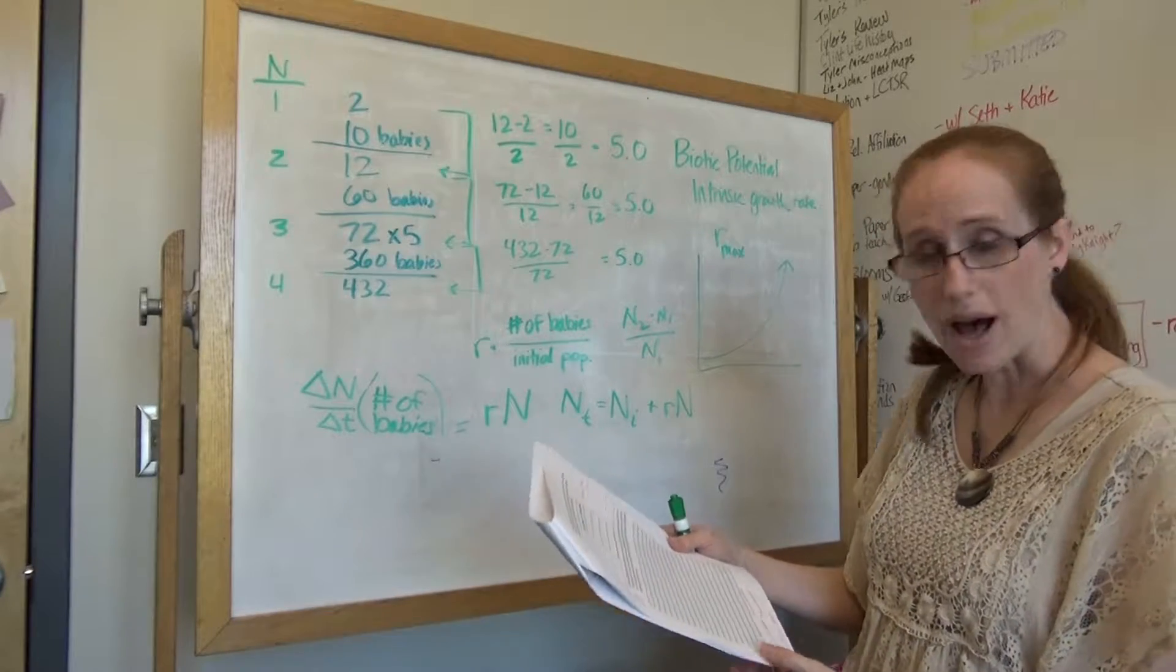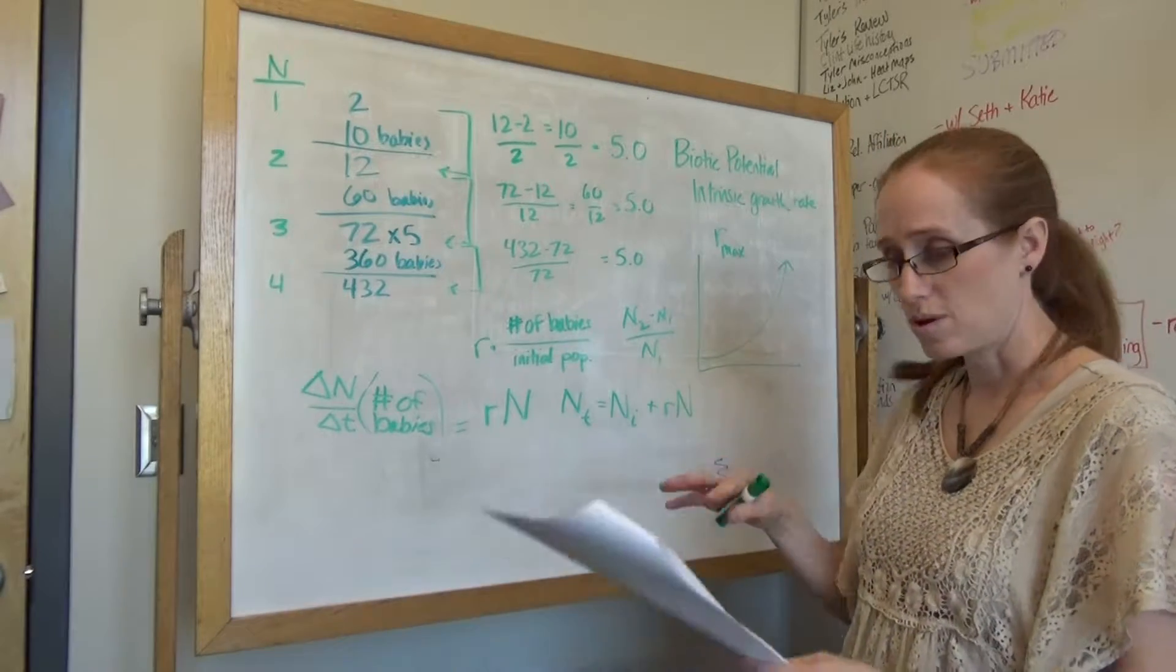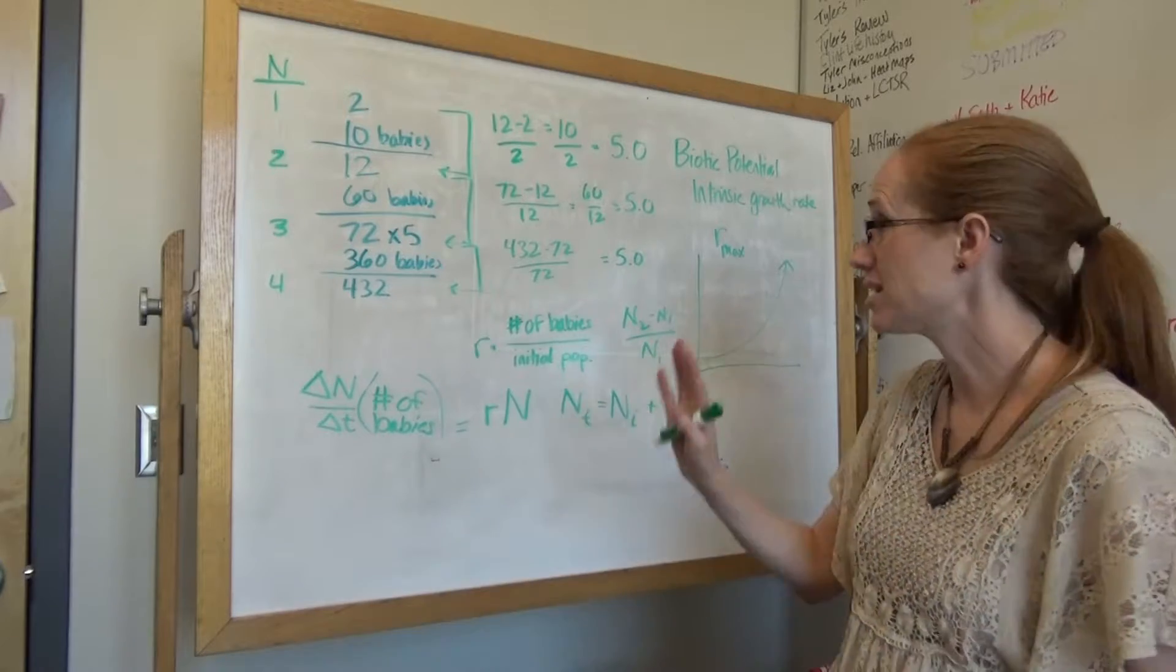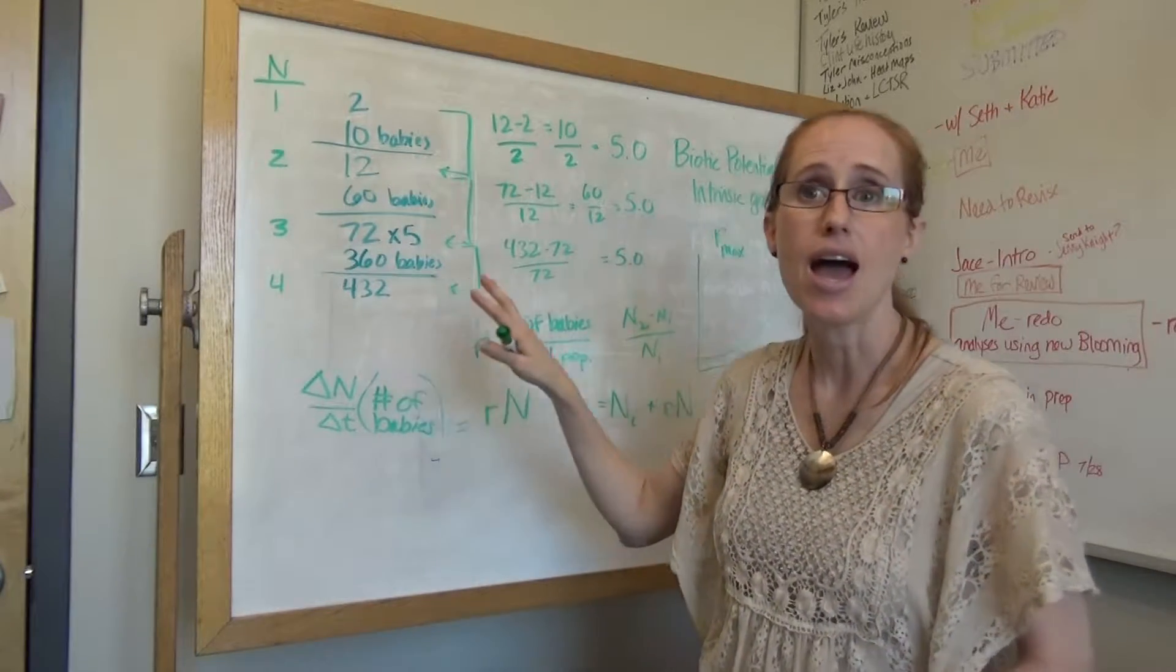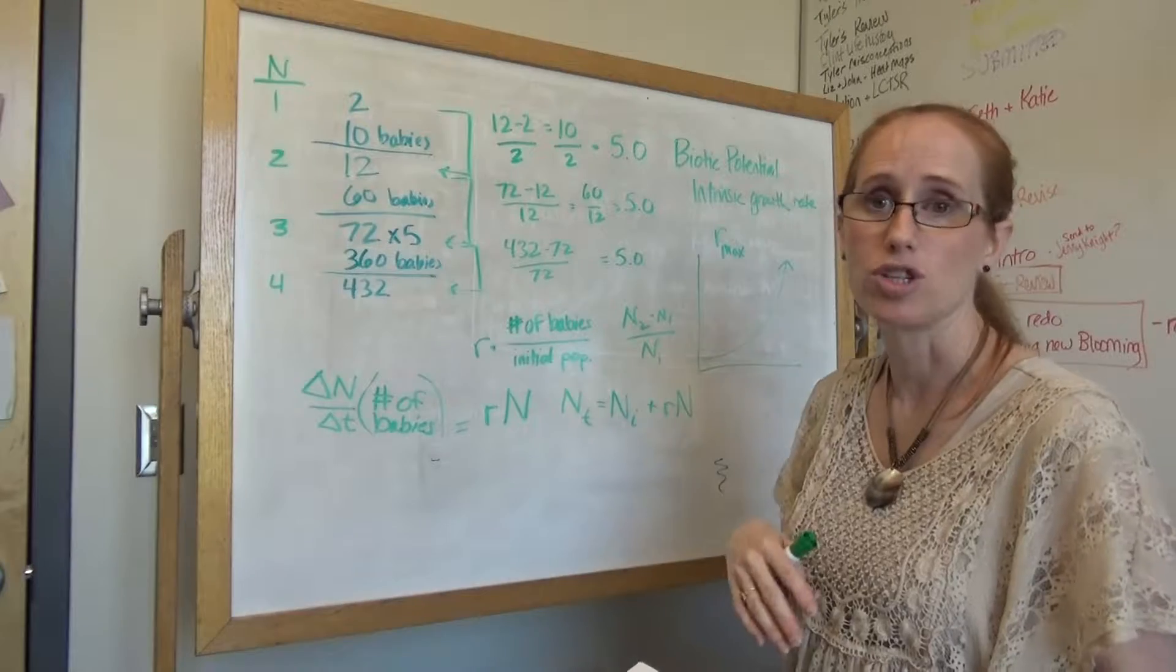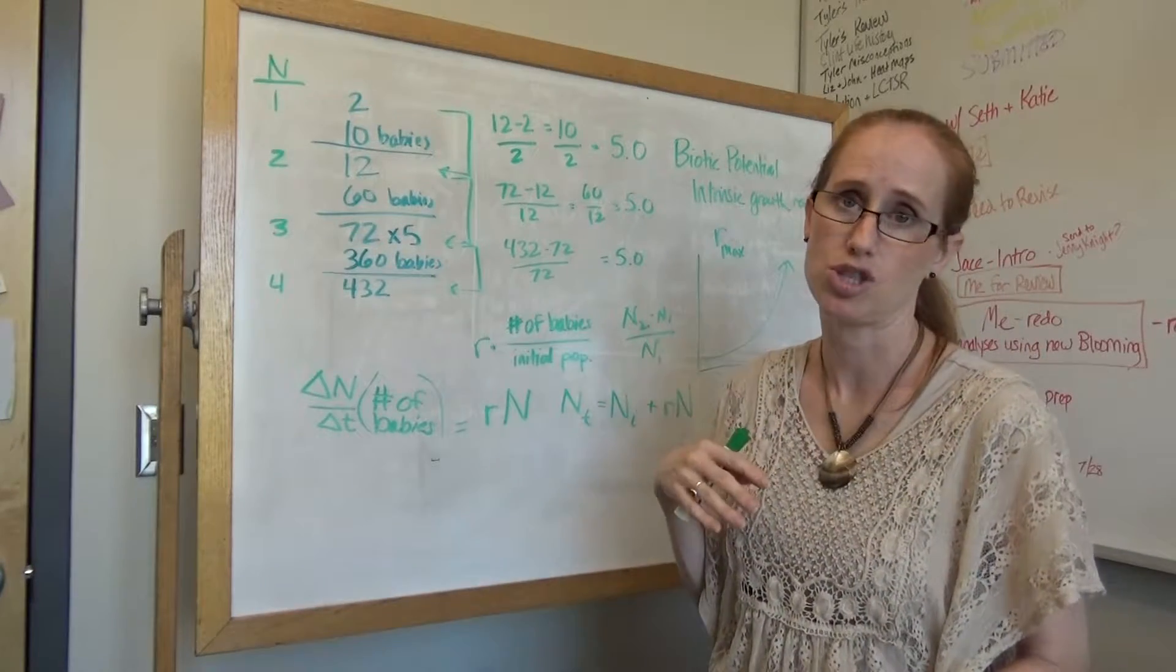So for on number 12, they're going to plot their expected numbers, so the ones that they calculated here, and then they're going to plot their four different jars, their jar and their three teammates' jars.